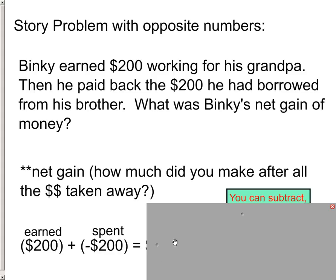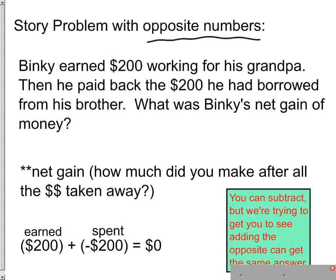And then you'd be able to see what your net gain is. And with this series of problems we're going to be using opposite numbers and you're kind of going to be shaking your head about why we're doing this but I just want to show this to you for the relationship. $200 plus negative $200 is $0. You can subtract it but that's not the point of this type of story problem.